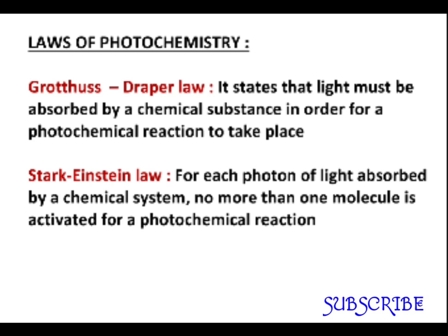Photochemical reactions are based on two laws. The first law is the Grotthuss-Draper law, which states that light must be absorbed by a chemical substance in order for a photochemical reaction to take place. For example, in photosynthesis, if the reactants carbon dioxide and water are in the dark — at night — photosynthesis does not take place. It takes place only in the presence of light, in daytime.